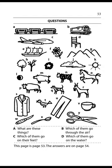Which of them go through the air? Airplanes and birds go through the air. Which of them go on their feet? Pigs, sheep, horses, cows, dogs, birds, and goats go on their feet. Which of them go on the water? Ships and some birds go on the water.